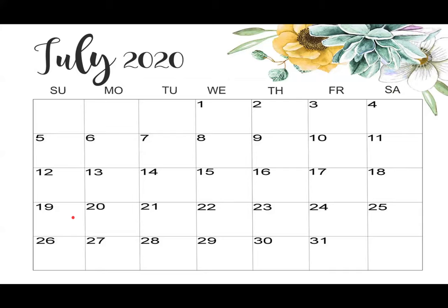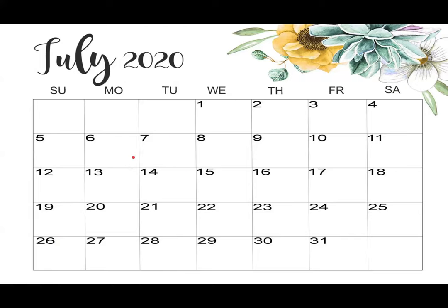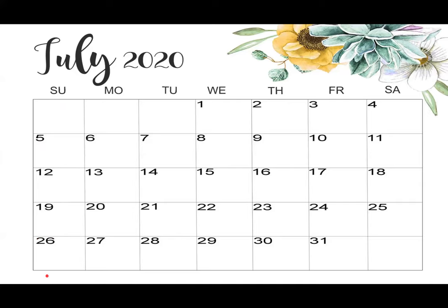We can also use a calendar to count how many Sundays or Mondays are in a month. Let's find out how many Sundays are in July. Su is for Sunday. We look down the Sunday column — skipping the blank box — and count: 5th, 12th, 19th, 26th. There are 4 Sundays in July.